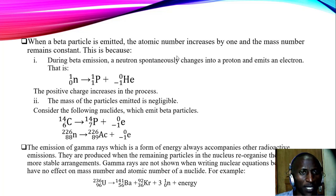When a beta particle is emitted, the atomic number increases by 1 and the mass number remains constant. This is because during beta emission a neutron spontaneously changes into a proton and emits an electron. That is to say 1-0 which is a neutron decays or is changed. It spontaneously changes into a proton and releases an electron. The positive charge increases in the process.